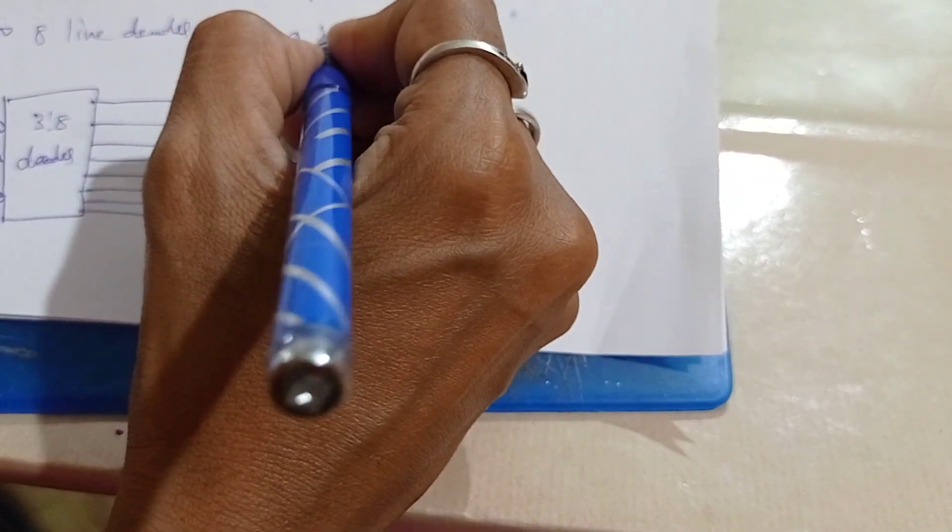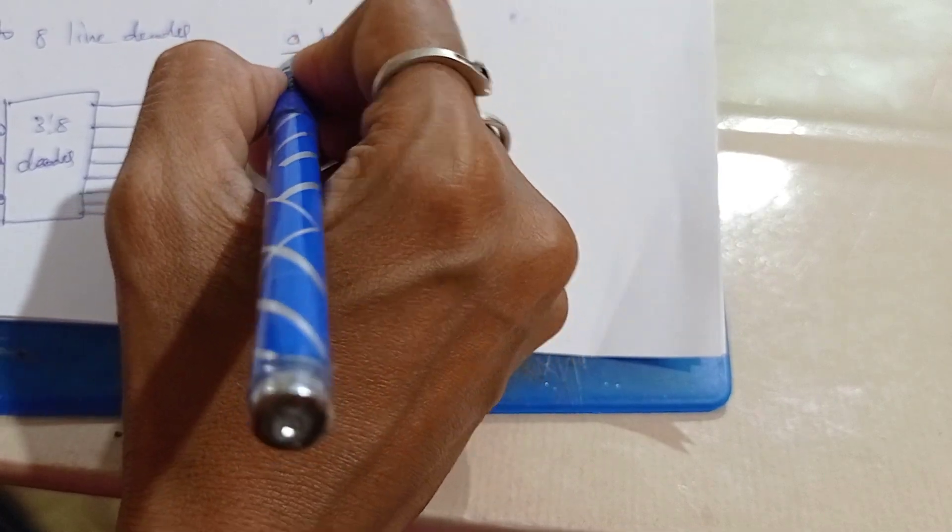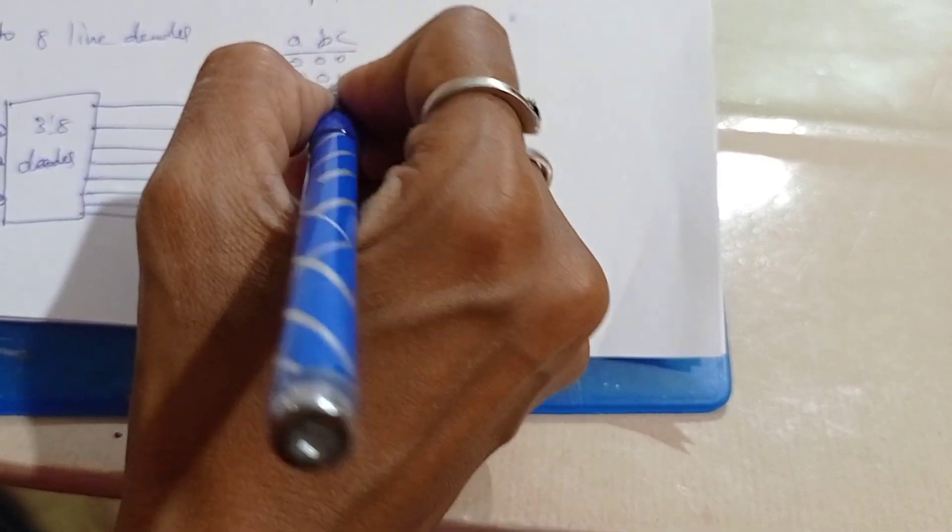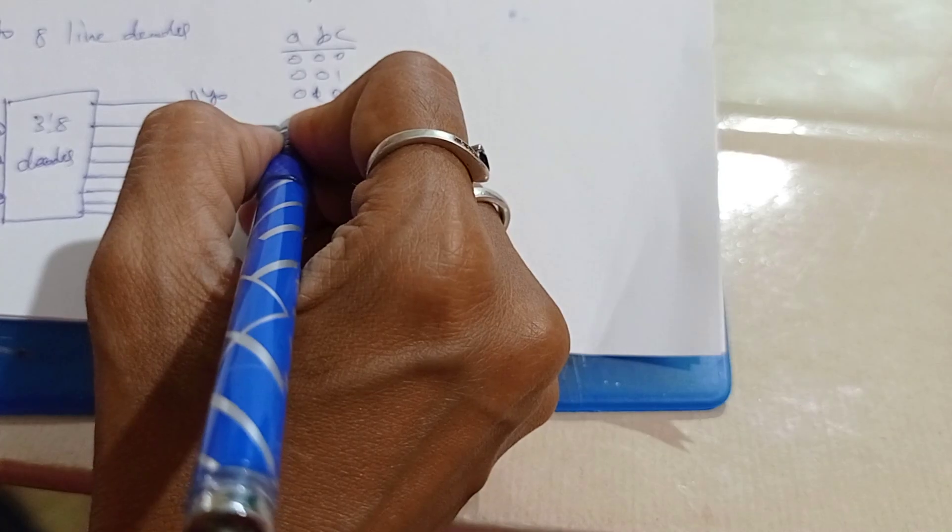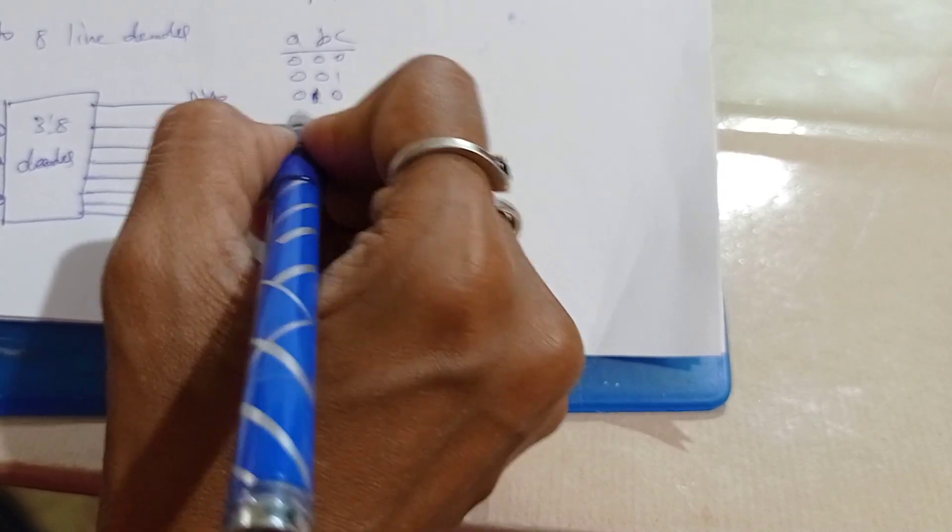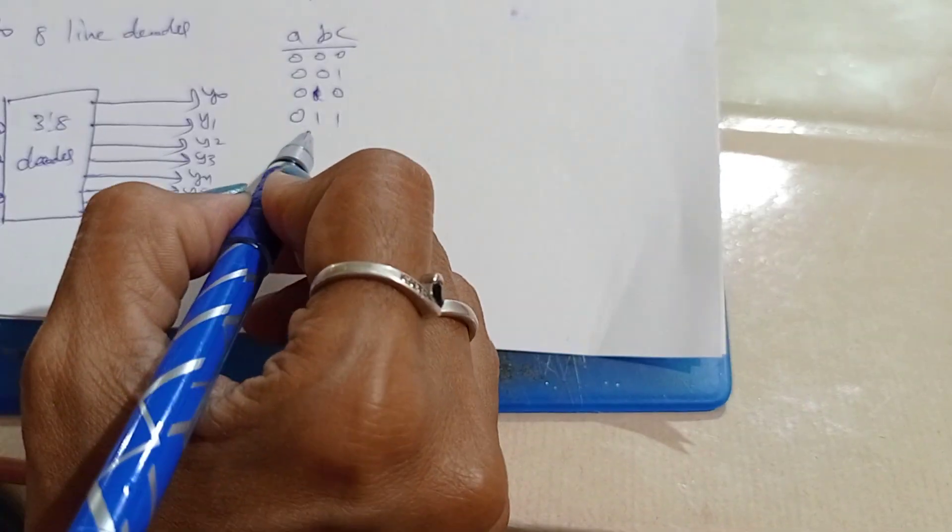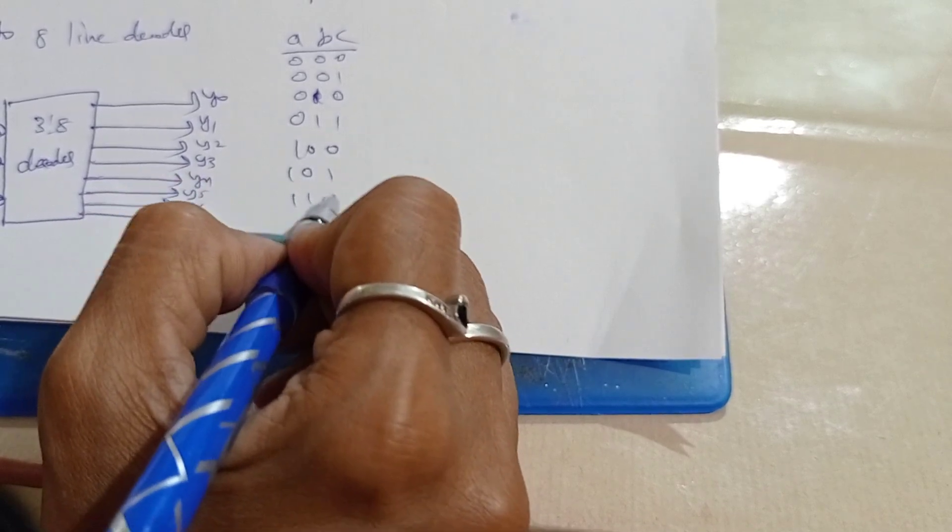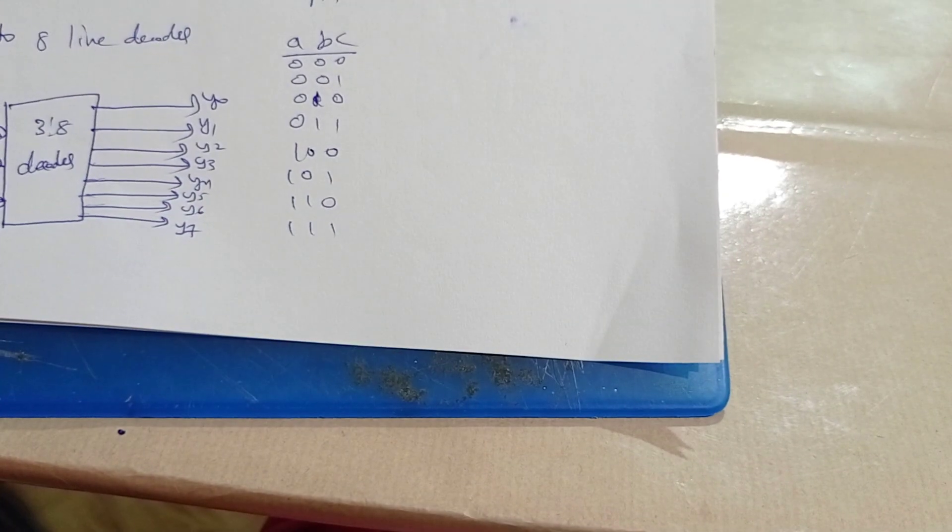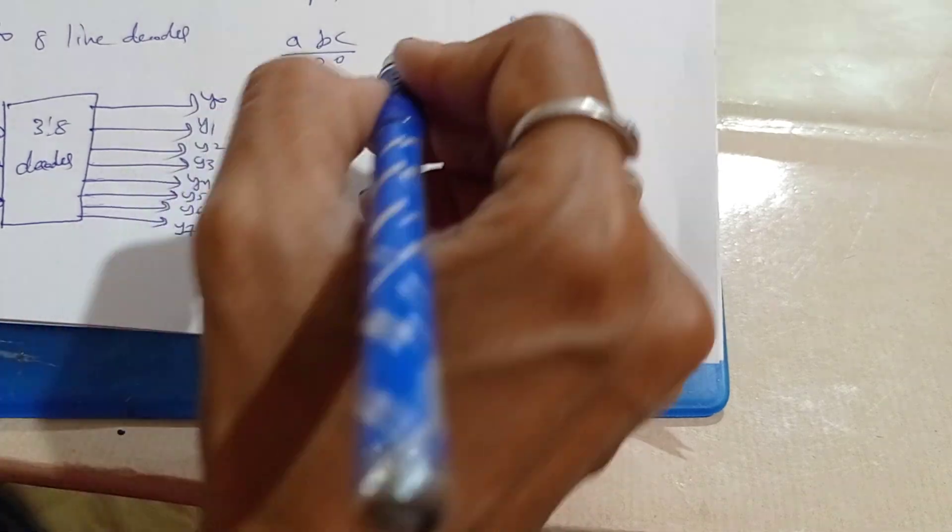For this, consider A, B, C: 0, 1, 2, 3, 4, 5, 6, 7. For this, what will be the Y0, Y1, Y2, Y3, Y4, Y5, Y6, Y7?